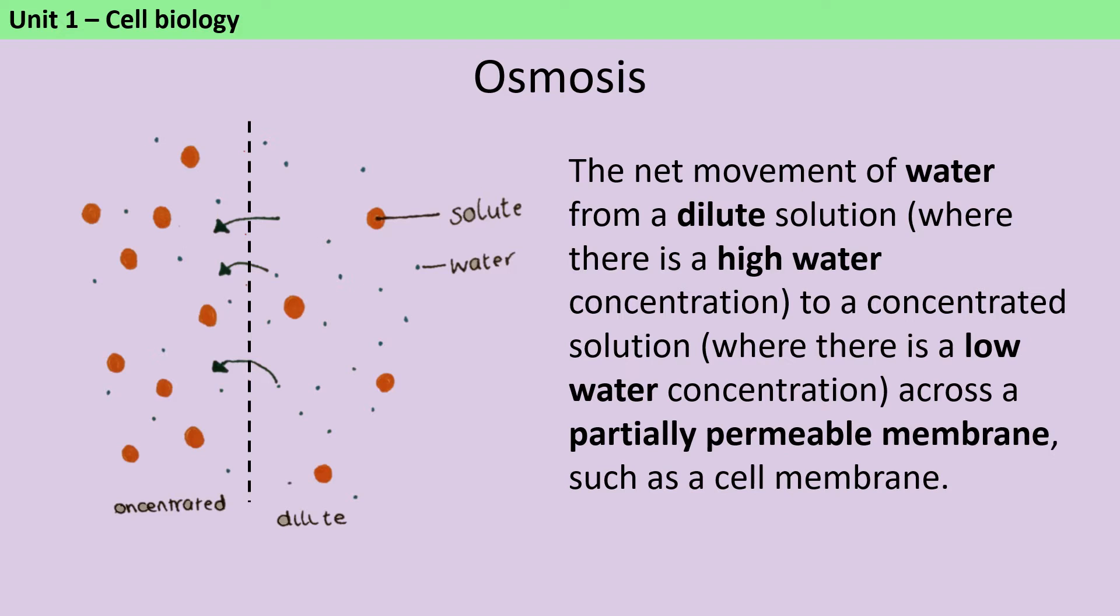The other thing you need to know is that osmosis will only occur where we have a partially permeable membrane. Permeable basically means holey, and then partially means that only certain substances can move through it. And that might be because of their size, or their polarity, or any number of reasons. But basically what's going to happen is that the water is able to move through that partially permeable membrane, but the other things that are in that solution, the solute, are not able to move.